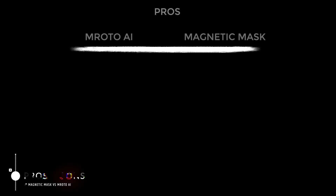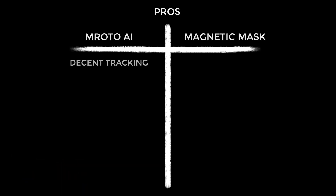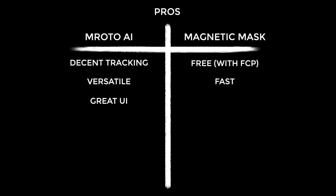Moving on to the pros and cons for each. Starting with the pros of M-Roto AI: generally I find the tracking side of things to be fairly accurate, and I find it a very versatile plugin — something I've used countless times already. I also find the user experience to be really pretty great — nice and slick with good mask shaping parameters like feather, smooth, shrink, expand. As for Magic Mask pros: it's free with Final Cut Pro, the masking and rendering is really fast — much faster than M-Roto. You can use multiple layers within a single instance of this plugin, which is something M-Roto can't do. You're going to get free updates and the performance will only improve over time.